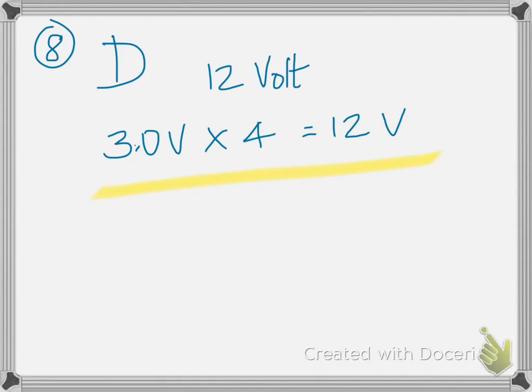Number 8 is a similar question. If you have a positive charge, and it contributes 3 volt, and if you have each of the other three corners filled, so now you have four similar charges, and therefore the total potential would be 12 volt, all of them being positive.